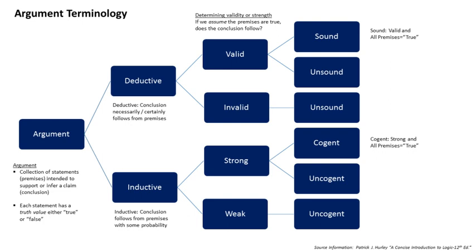World-disclosing arguments are a group of philosophical arguments that are said to employ a disclosive approach, to reveal features of a wider ontological or cultural-linguistic understanding — a world, in a specifically ontological sense — in order to clarify or transform the background of meaning and logical space on which an argument implicitly depends.